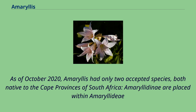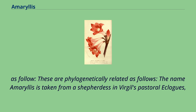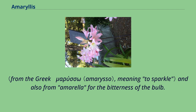As of October 2020, Amaryllis had only two accepted species, both native to the Cape provinces of South Africa. Amaryllidinae are placed within Amaryllidoideae, and these are phylogenetically related accordingly. The name Amaryllis is taken from a shepherdess in Virgil's pastoral Eclogues, meaning to sparkle, and also from Amaryllis for the bitterness of the bulb.